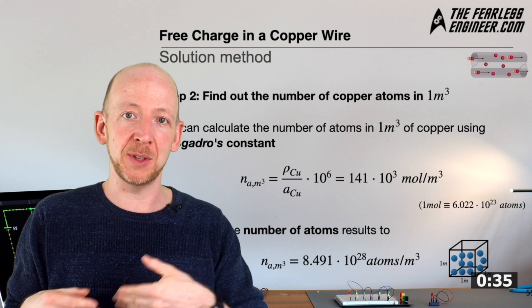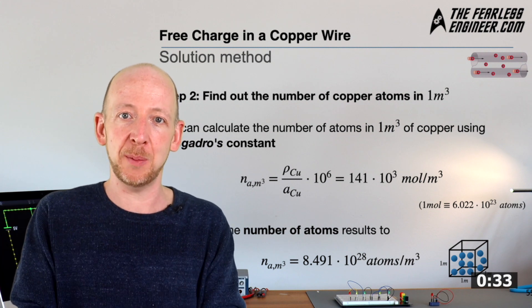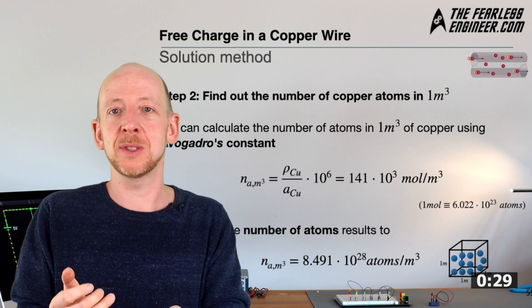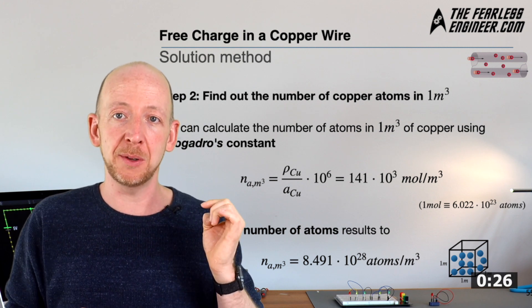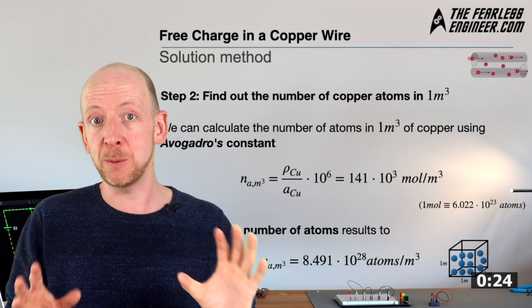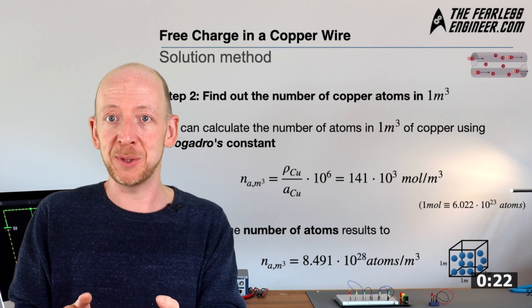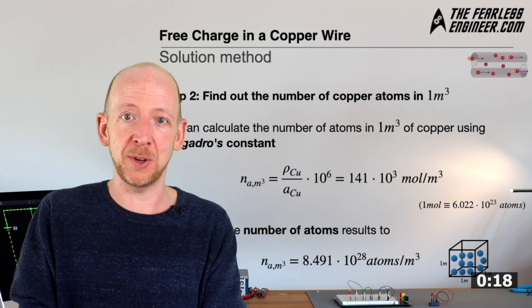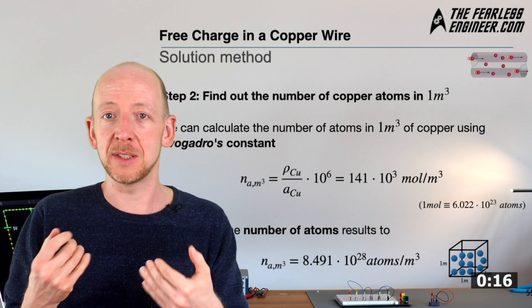We have already learned in the last video that there is one free electron per copper atom in the conductor and thus the number of atoms for copper corresponds to the number of free charges. And this result is also called charge carrier density. Oh and by the way, if we had another material we would have to reckon with a different number of free electrons per atom. In the case of aluminum for example this would be 3 instead of 1 with copper.